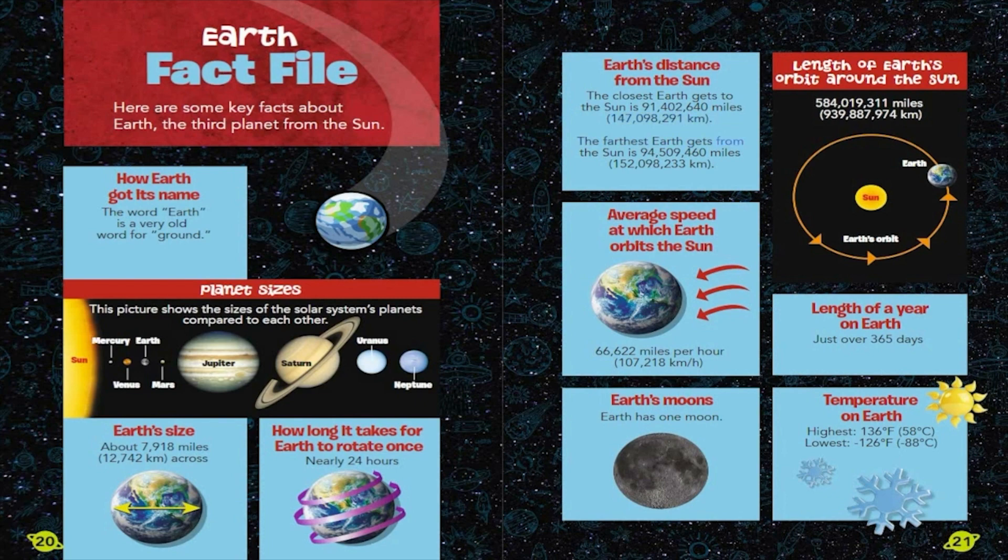Earth's Distance from the Sun. The closest Earth gets to the Sun is 91,402,640 miles, 147,098,291 kilometers. The farthest Earth gets from the Sun is 94,509,460 miles, 152,098,233 kilometers. Length of a year on Earth: Just over 365 days. Earth's moons: Earth has one moon.